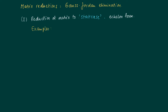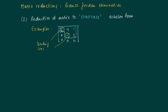First, we're going to reduce a matrix to a staircase form, which is also called an echelon form. Consider the following matrix where we have a couple of constants equal to zero, and you see that the nonzero elements are forming a kind of staircase. In the corners we have nonzero elements, and these elements are called pivotal elements or leading constants.